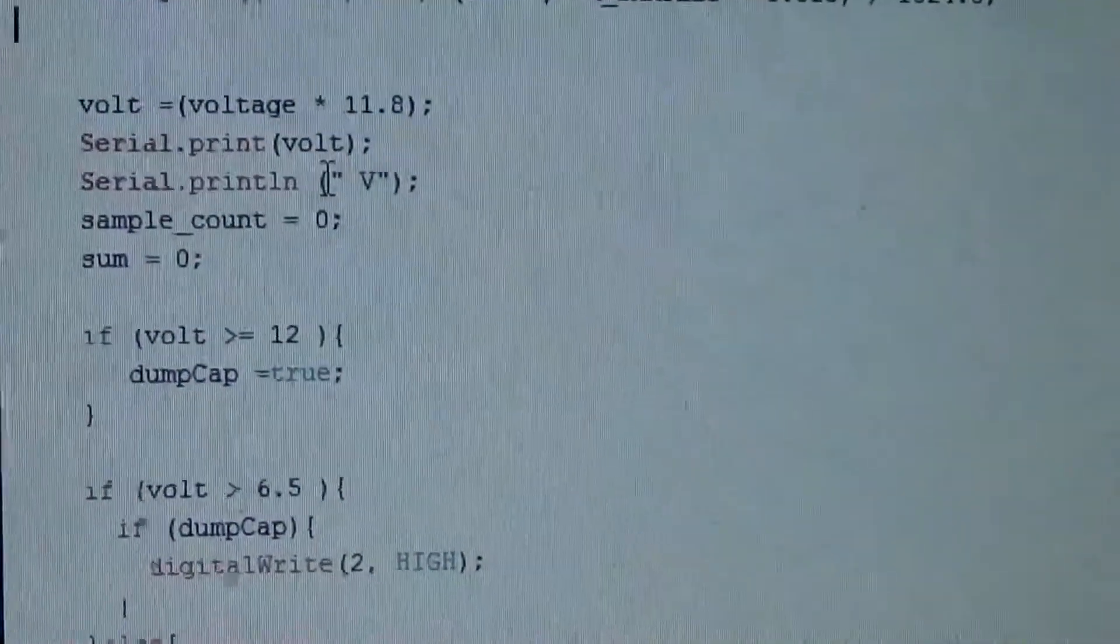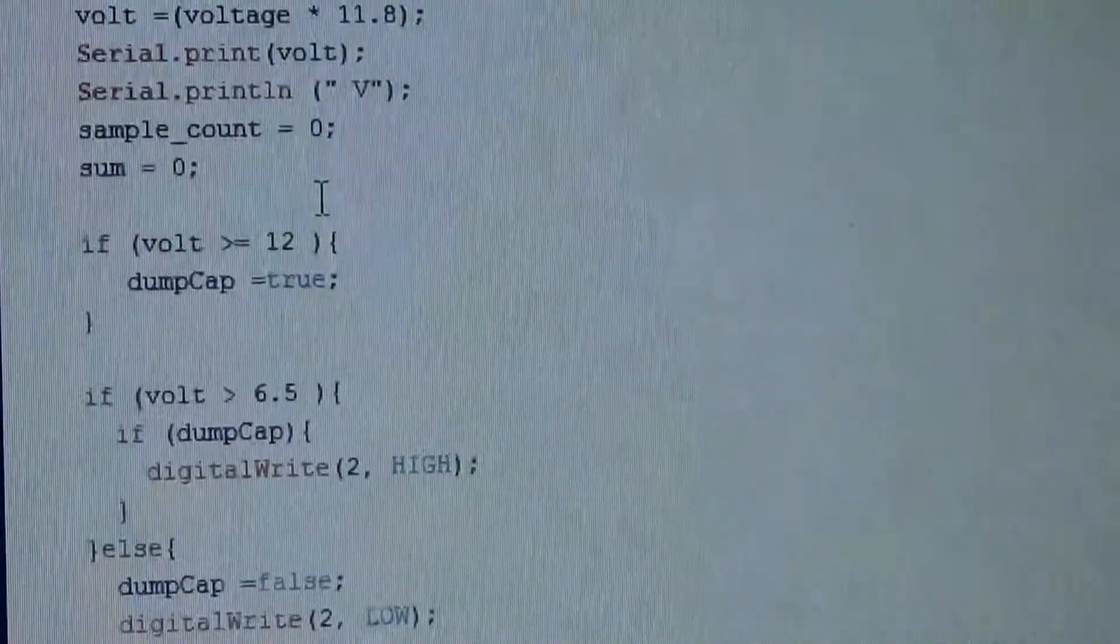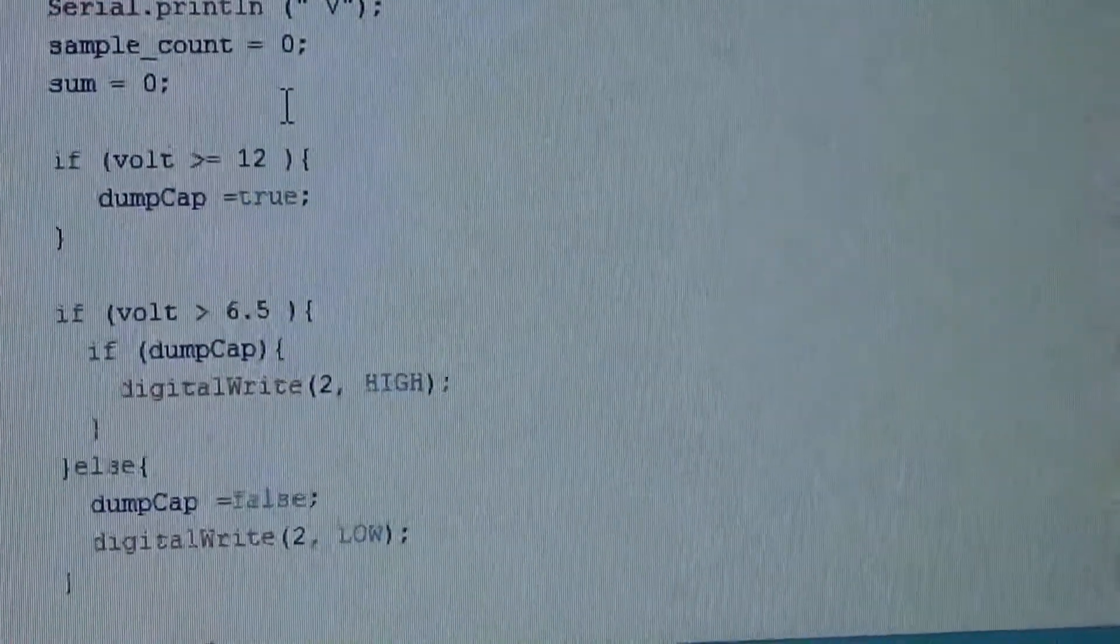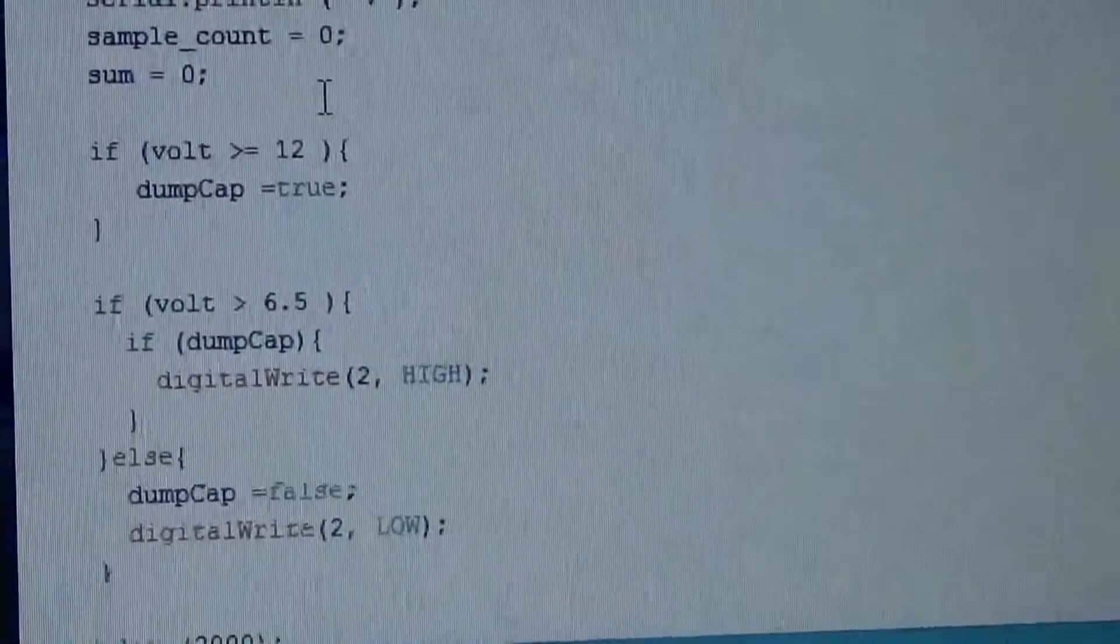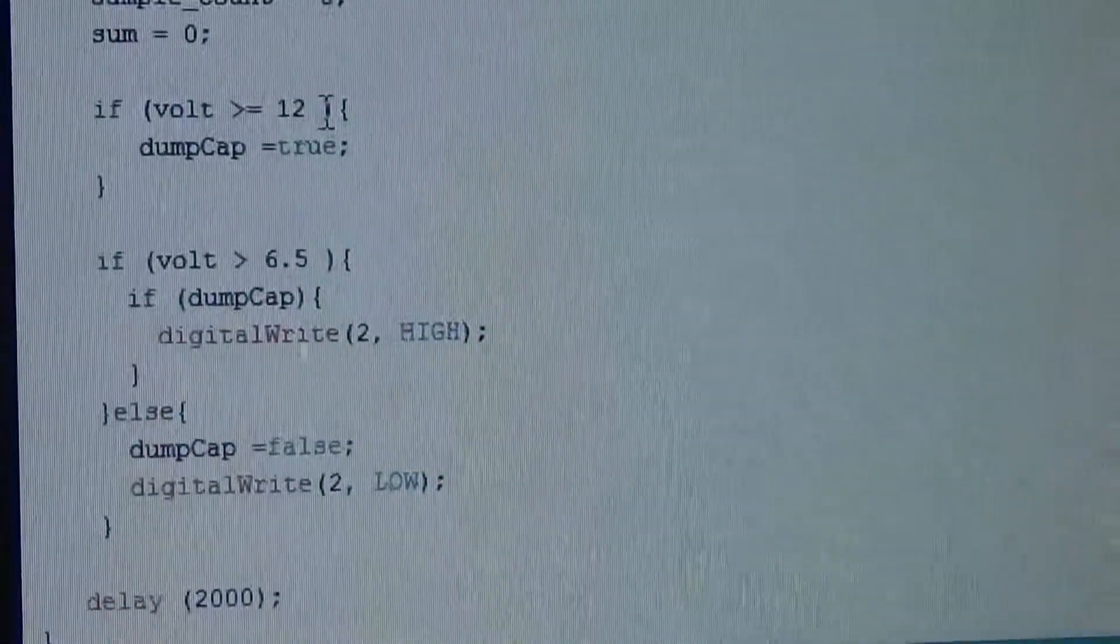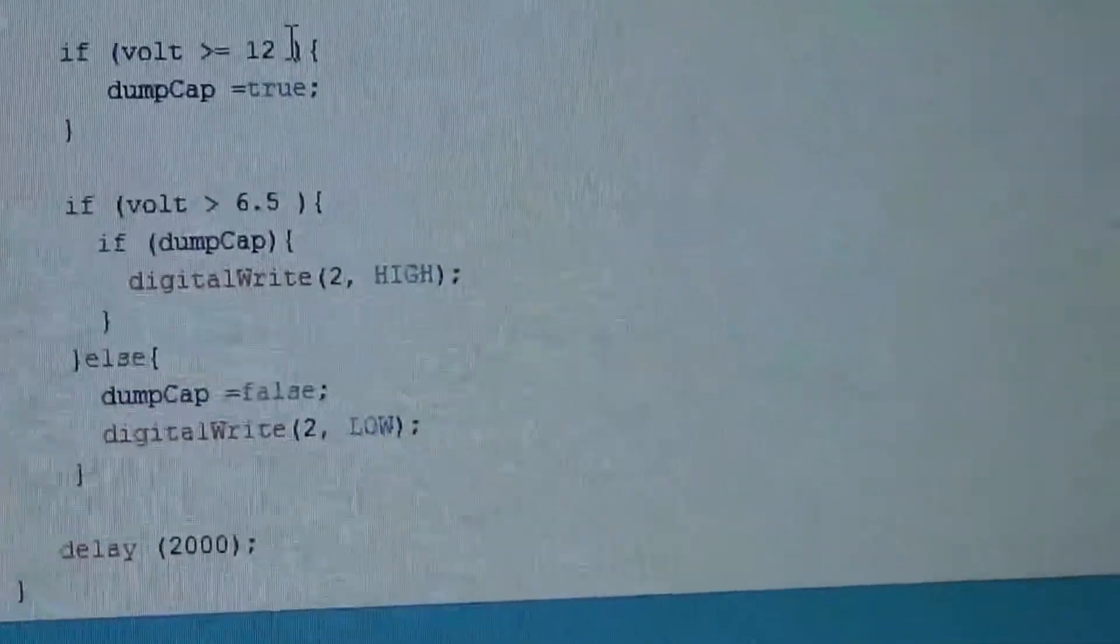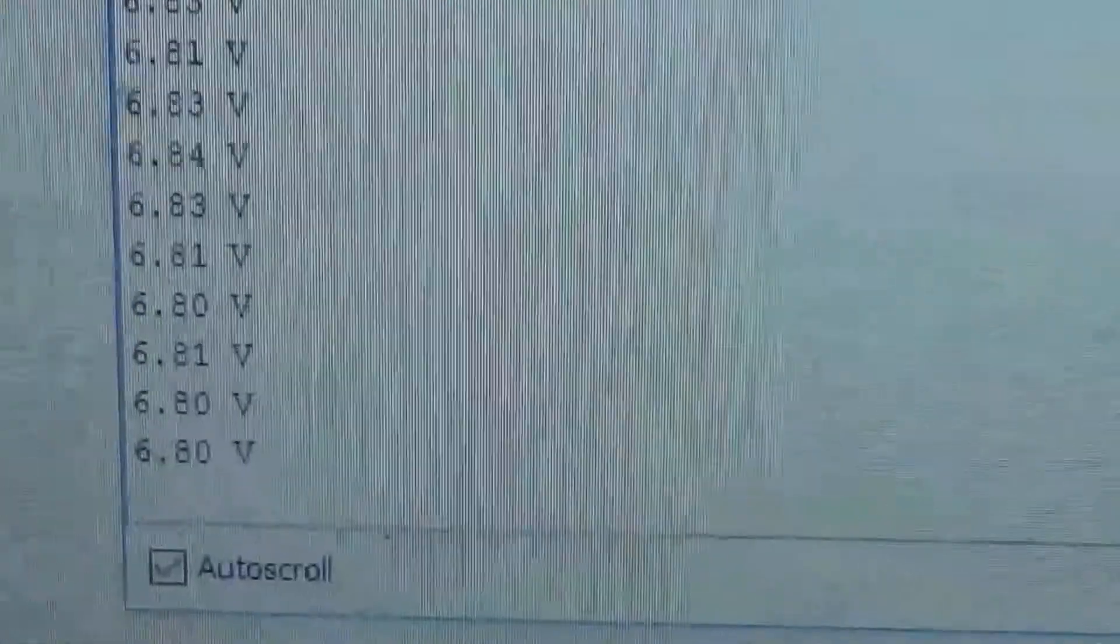Right now I have it set so if it's over 12 volts it'll dump supercapacitors, and then while it's still greater than 6.5 volts we're turning the relay on. Then we turn the relay off and it sleeps for about 2 seconds. Let me show you the serial monitor. The voltage it's showing is about 6.8 or so.